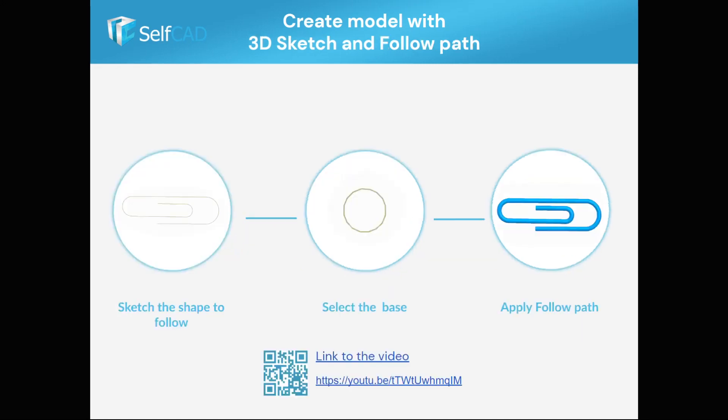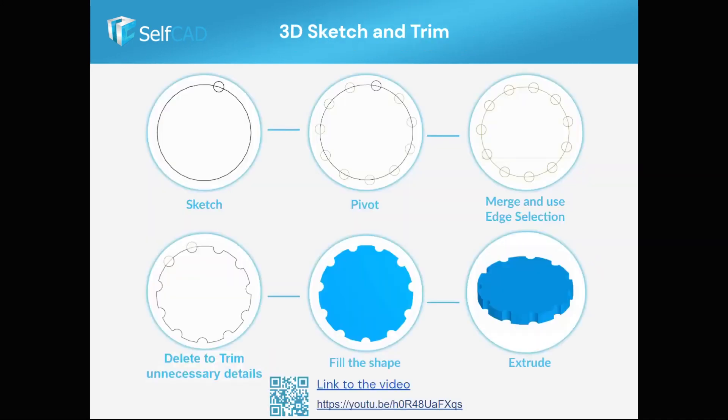FollowPath is another great tool. Like many tools in SelfCAD, this is a multi-purpose tool. You can use it to create objects or to extrude along a profile, like in this example. Many design flows require to first create profiles and then trim away parts.